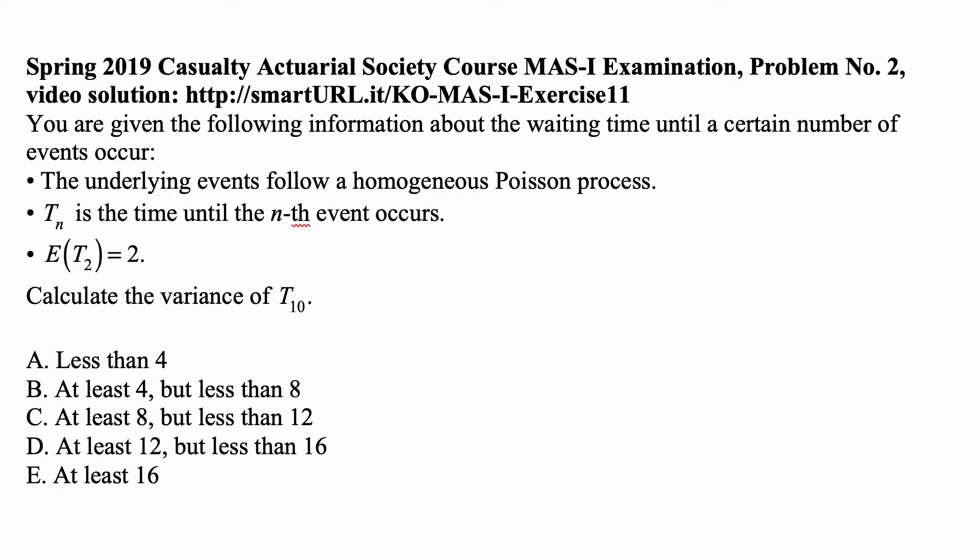You are given the following information about the waiting time until a certain number of events occur. The underlying events follow a homogeneous Poisson process. T_n is the time until the nth event occurs. E(T_2) is 2. Calculate the variance of T_10.